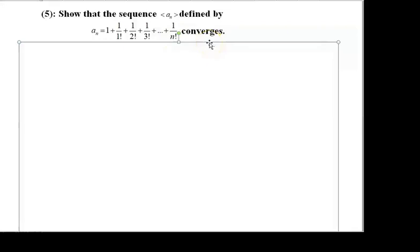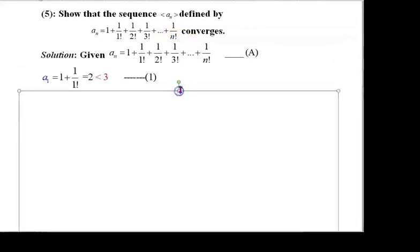Here, let us first show that this sequence is bounded above, then show that it is monotonically increasing, and then we can conclude that it is a convergent sequence. We are given aₙ = 1 + 1/1! + 1/2! + 1/3! + ... + 1/n!.